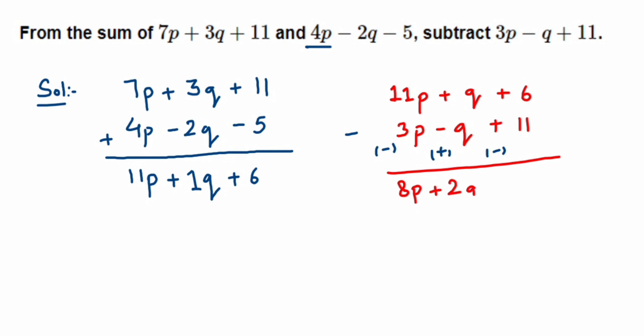And then 6 - 11, so 6 - 11 is 5, but 11 has a negative sign. Take this sign which is negative - it's greater, 11 is greater, so we should take the sign of 11 which is negative, so we'll get here -5. So the answer here is 8p + 2q - 11. I hope it's clear.